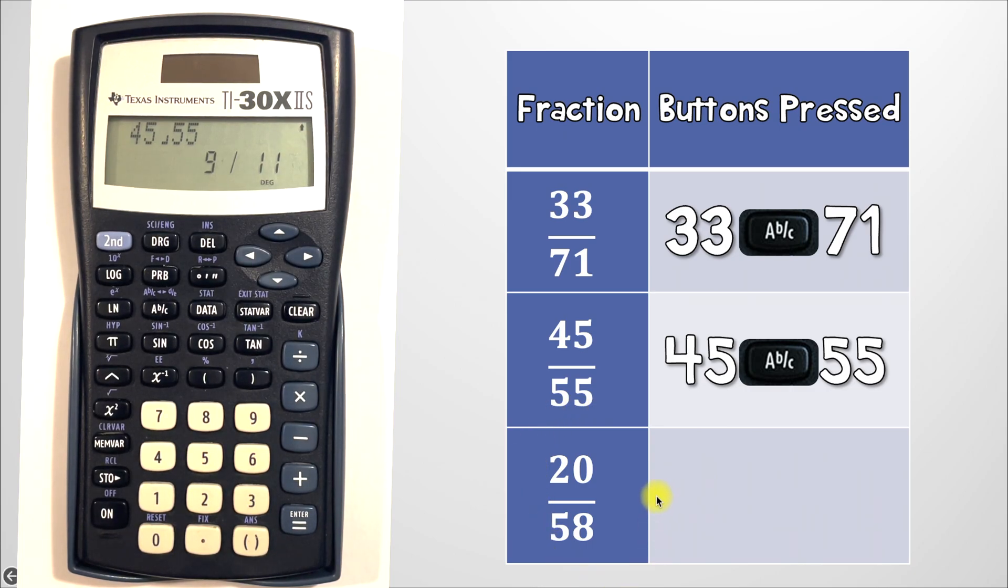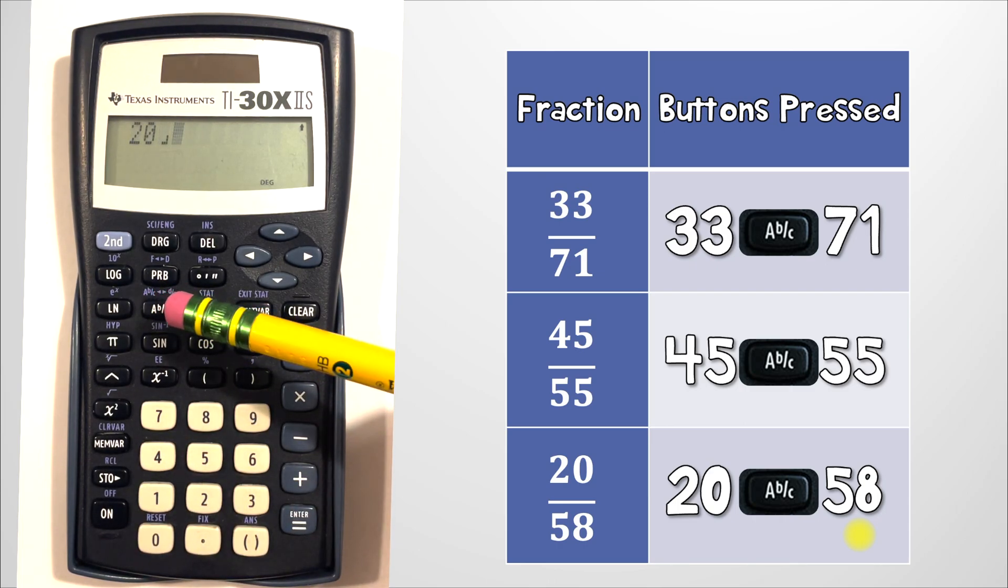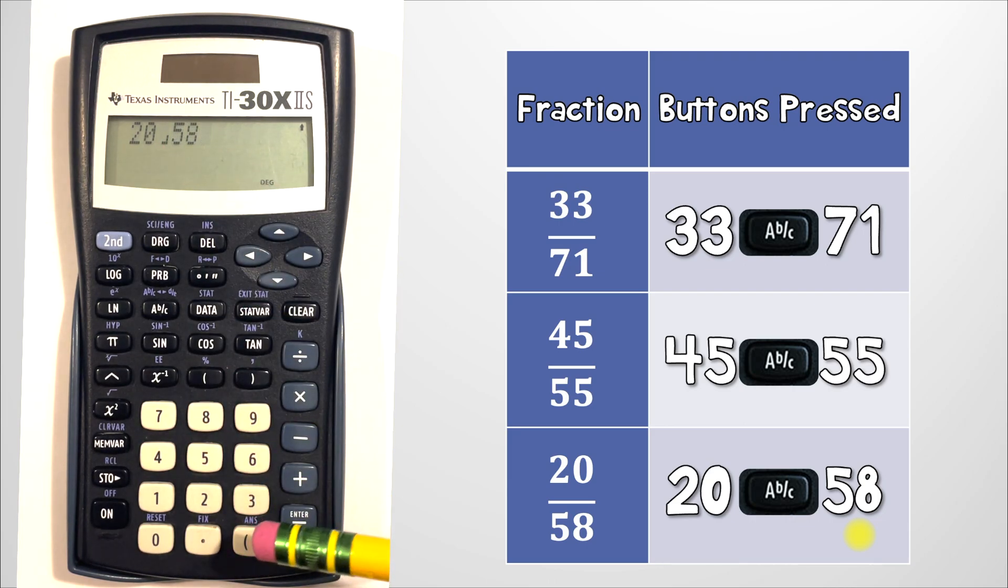And how about the last example? So the first thing you should have entered was 20 because that's the top. Then ABC because it's a fraction. Then 58 because that's the denominator. So let's do that all together now on the calculator. So we've got 20, ABC button that gives us a bracket, and then 58 and then hit enter.